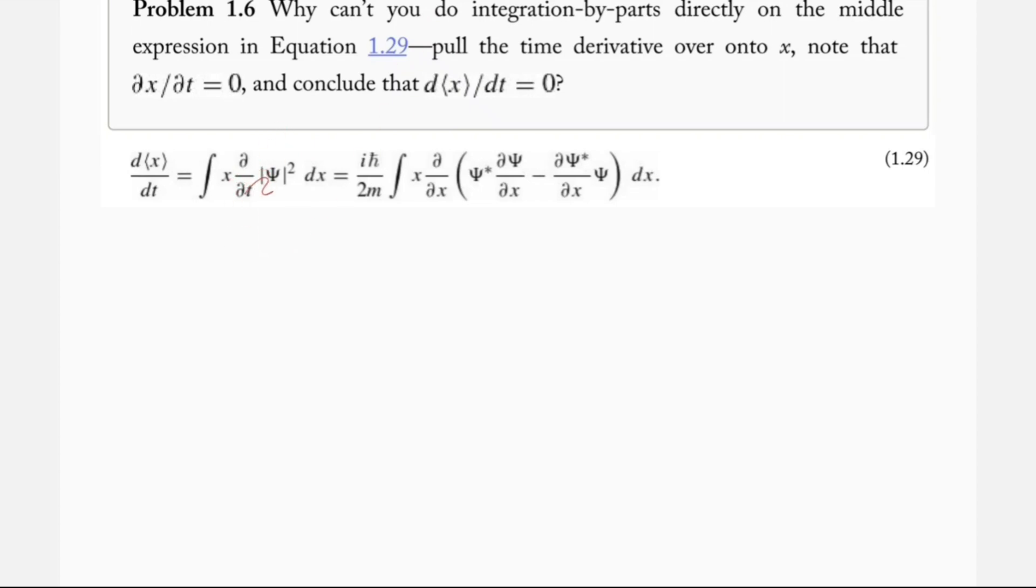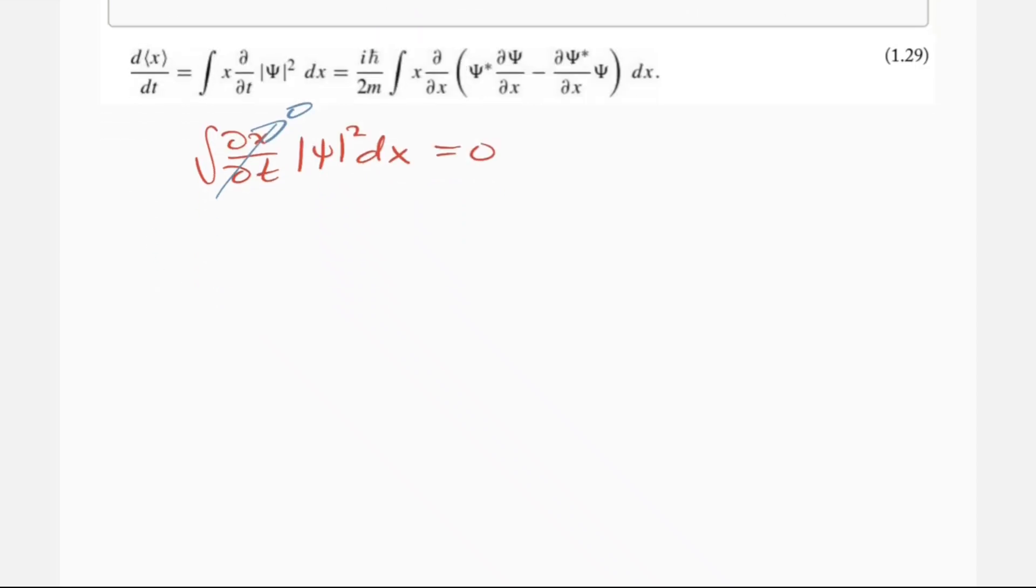But essentially to go about this problem, just take a look here at what it's even saying. It's asking why we can't just pull this d/dt over onto x, and so then we would have the integral of dx/dt psi squared dx equals zero. And then we would say okay well this equals zero, so then because that equals zero everything else in the integral is going to zero out, and then we would say the derivative with respect to t of the expectation value of x equals zero. That's terrible math.